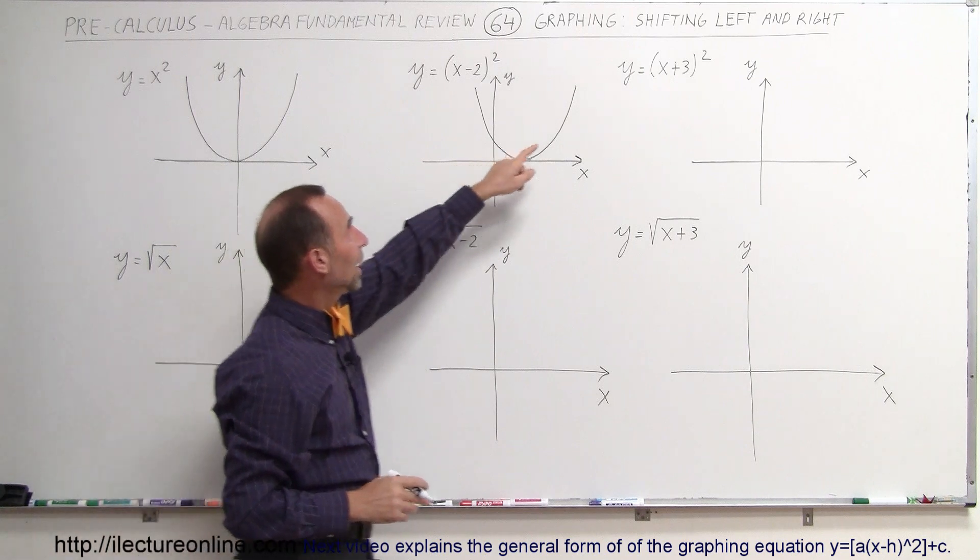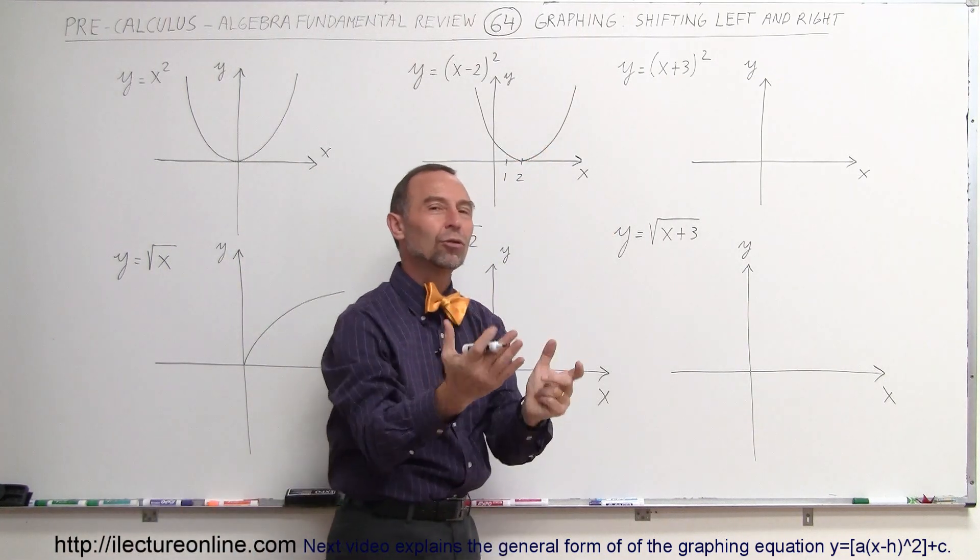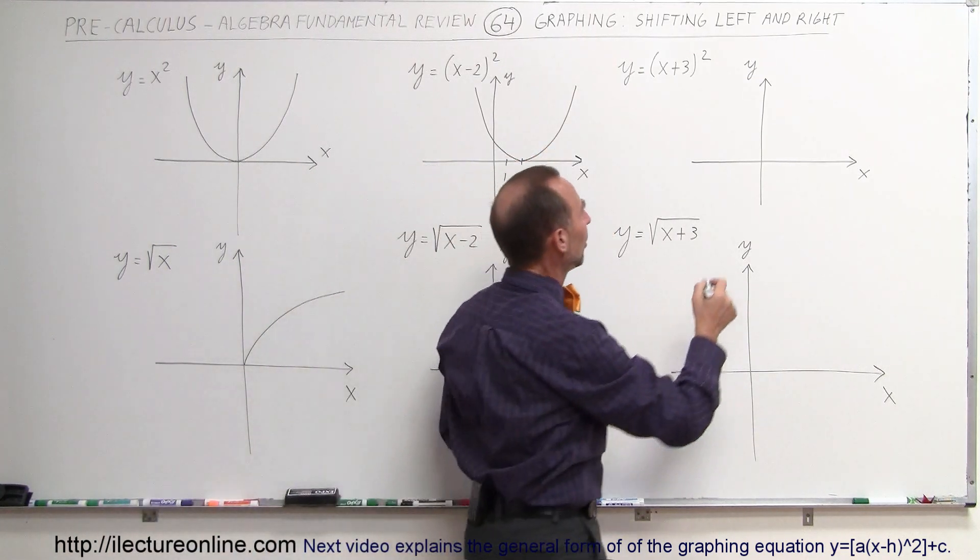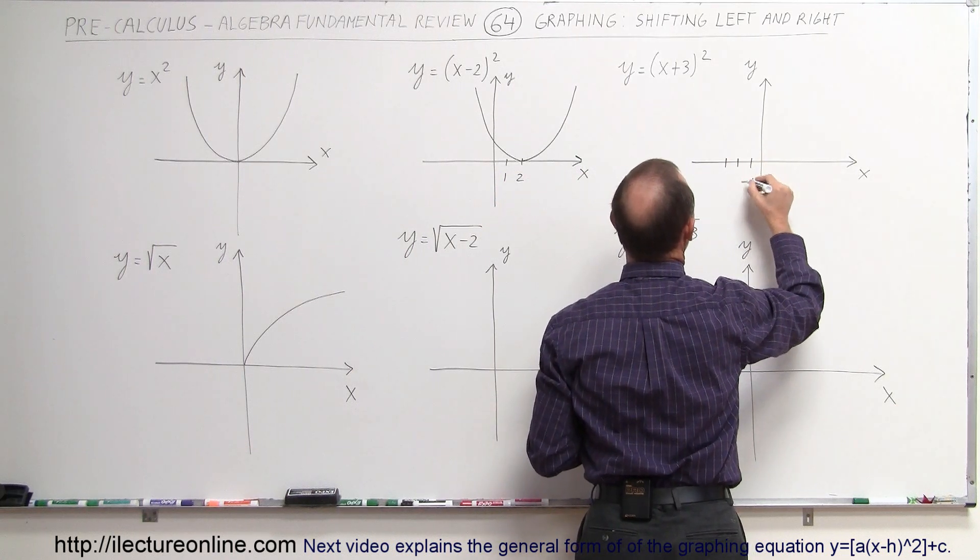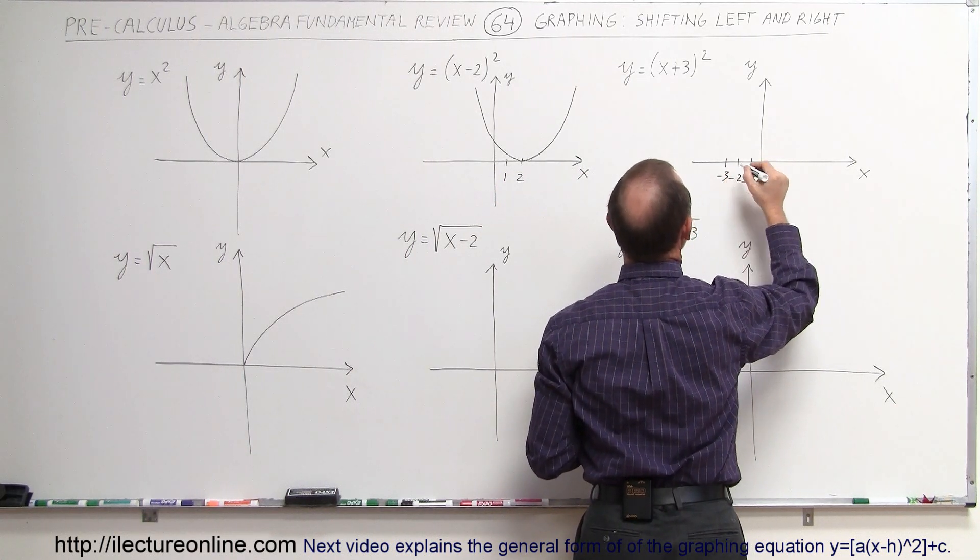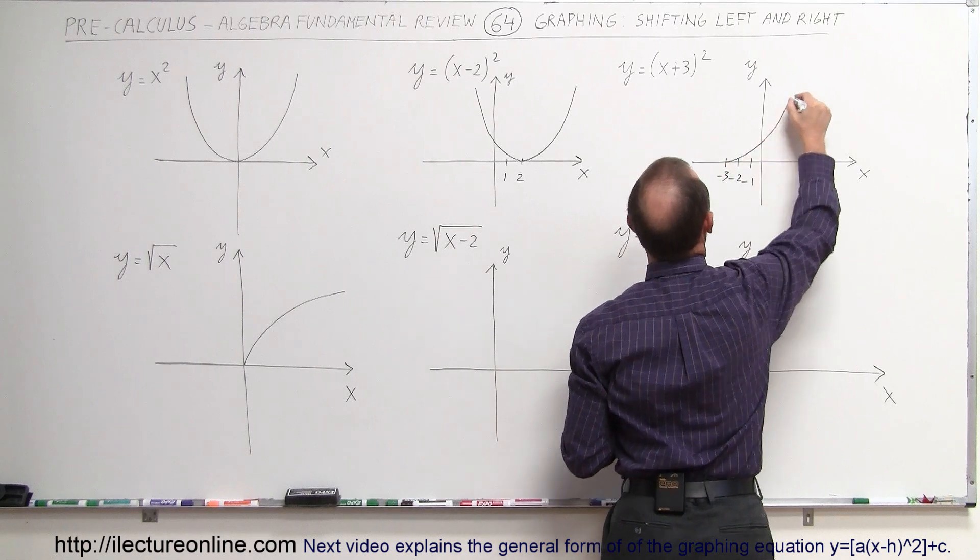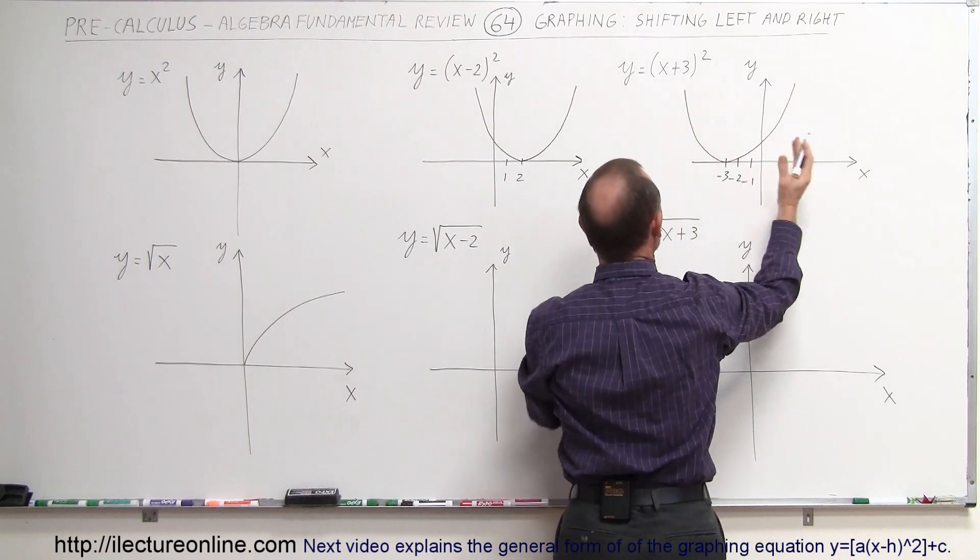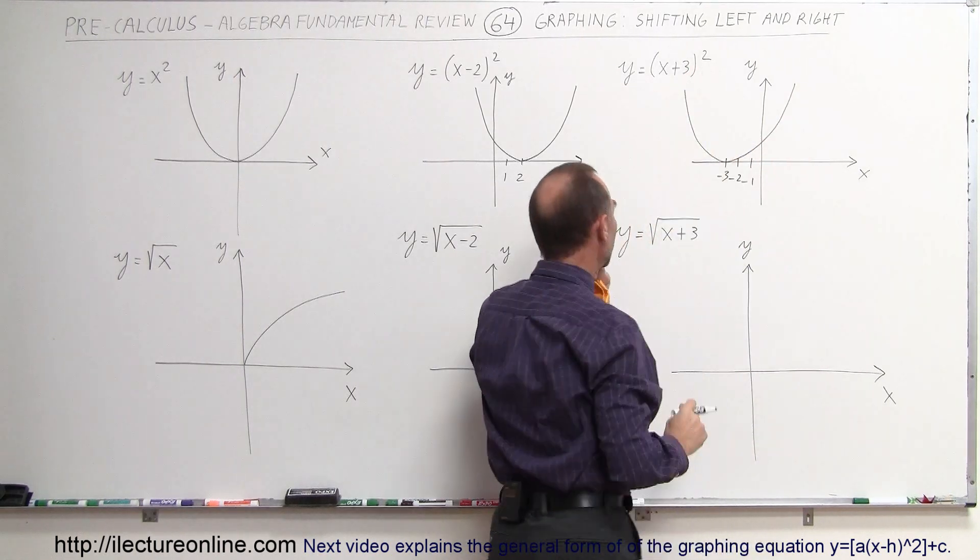Now what happens when you write x plus 3? Well, that means it's going to be shifted to the left three units. So we have 1, 2, 3, minus 1, minus 2, minus 3, and so the parabola now is going to look like this. It's going to be shifted to the left three units.